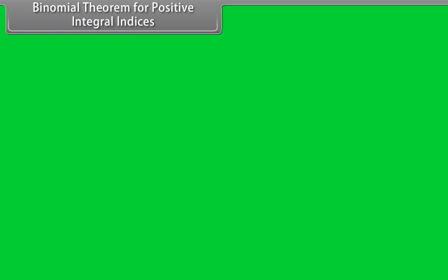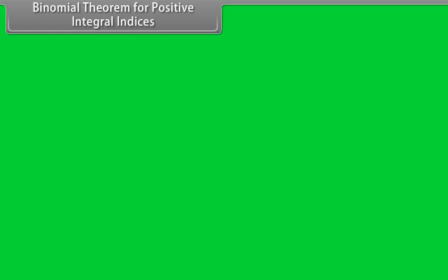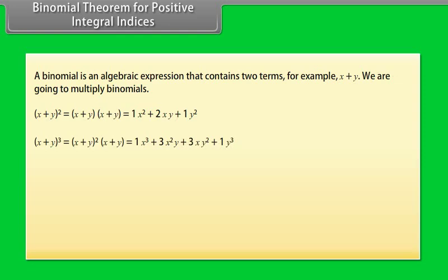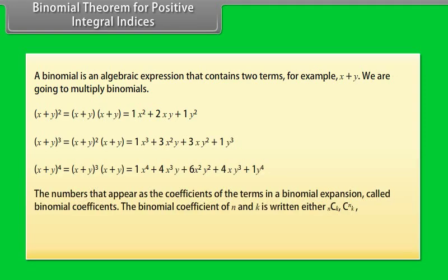Binomial theorem for positive integral indices. A binomial is an algebraic expression that contains two terms. For example, x plus y. We are going to multiply binomials. The numbers that appear as the coefficients of the terms in a binomial expansion are called binomial coefficients. The binomial coefficient of n and k is written either as nCk.